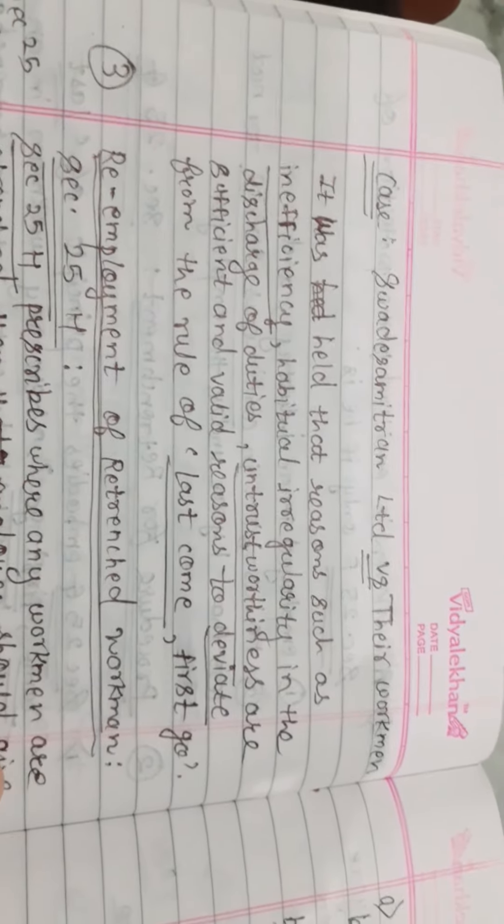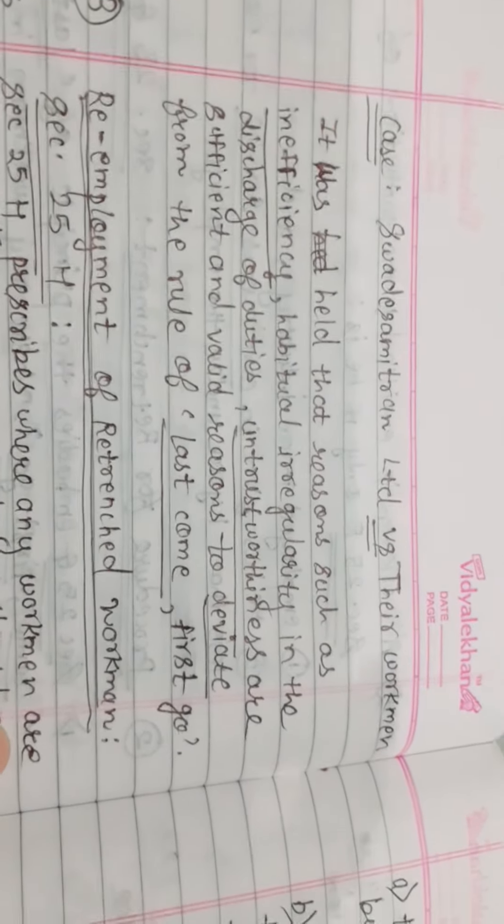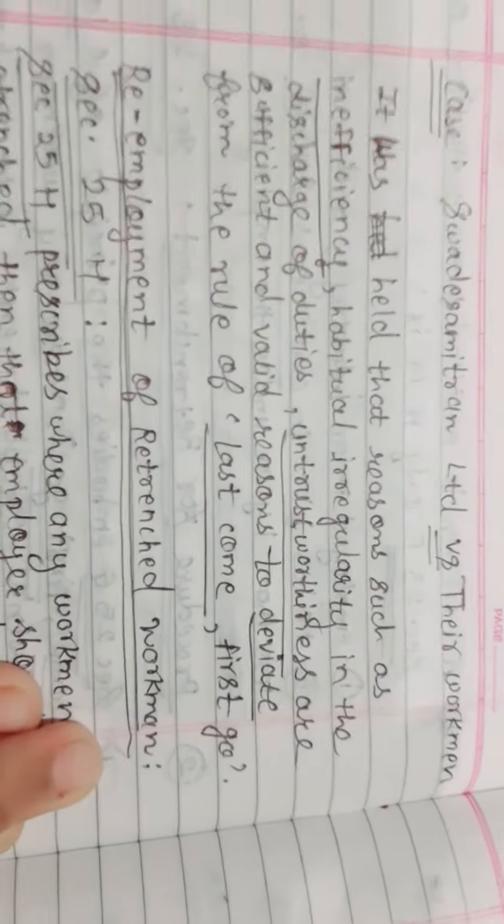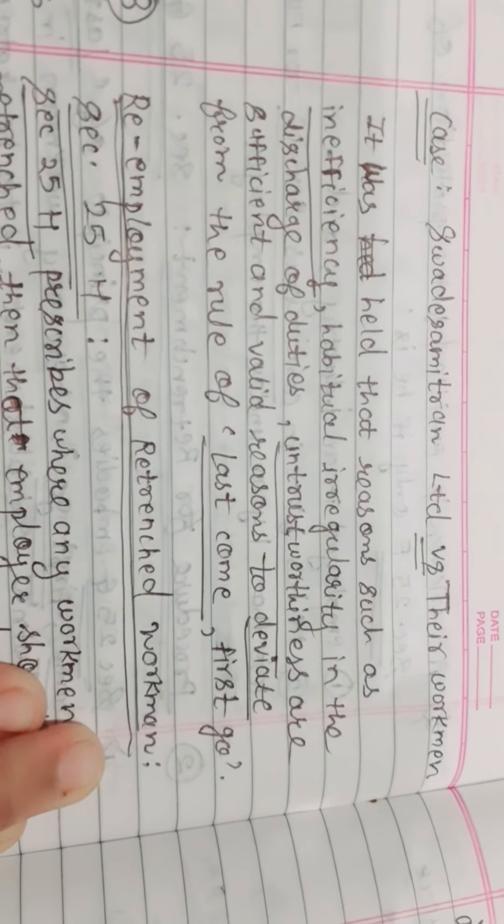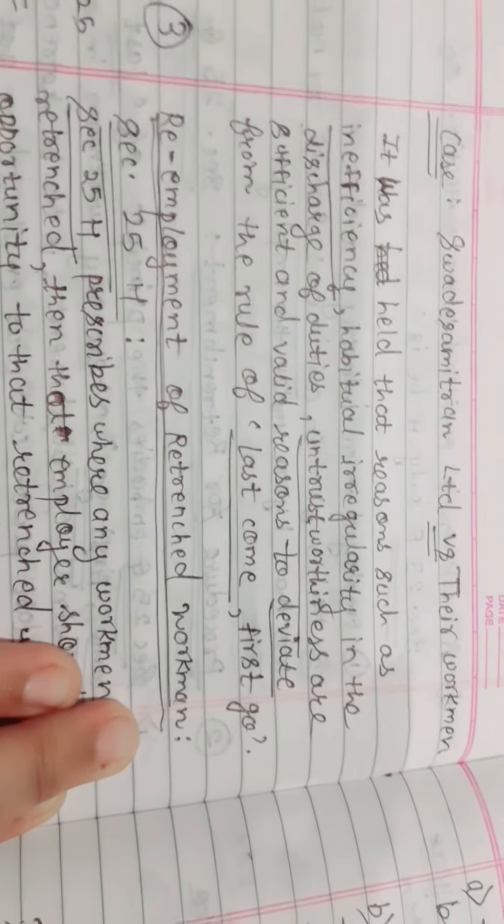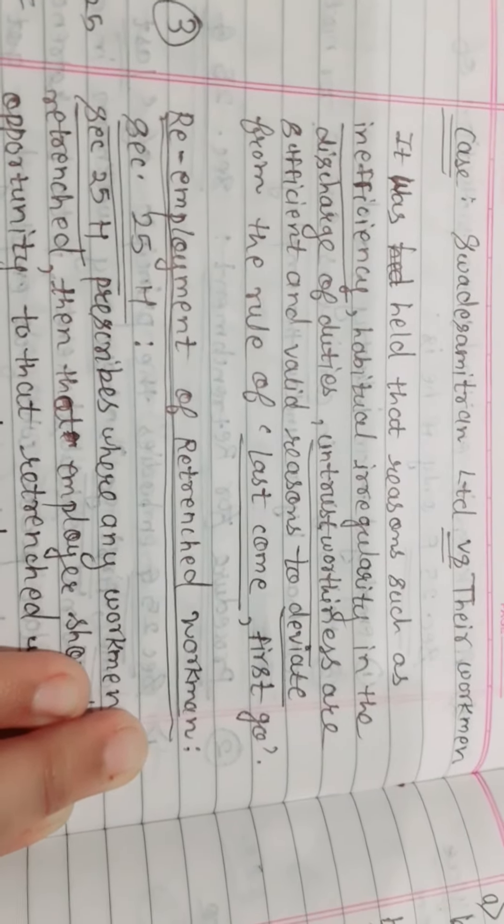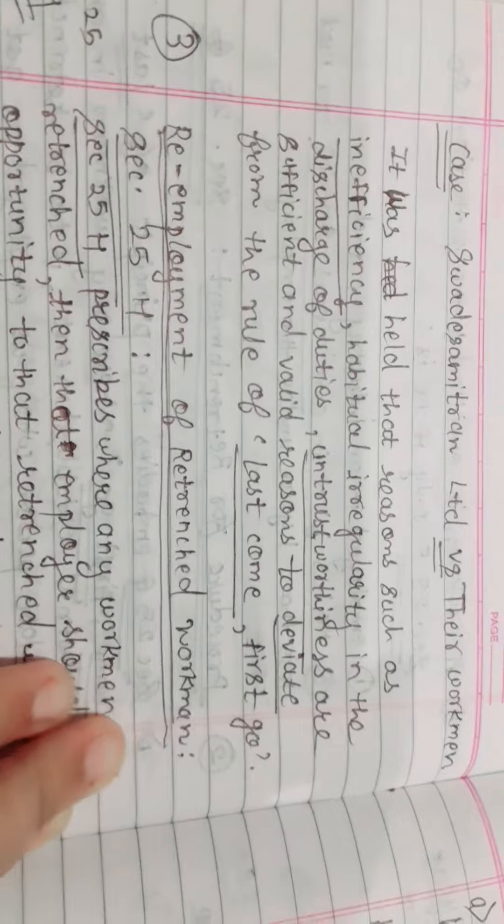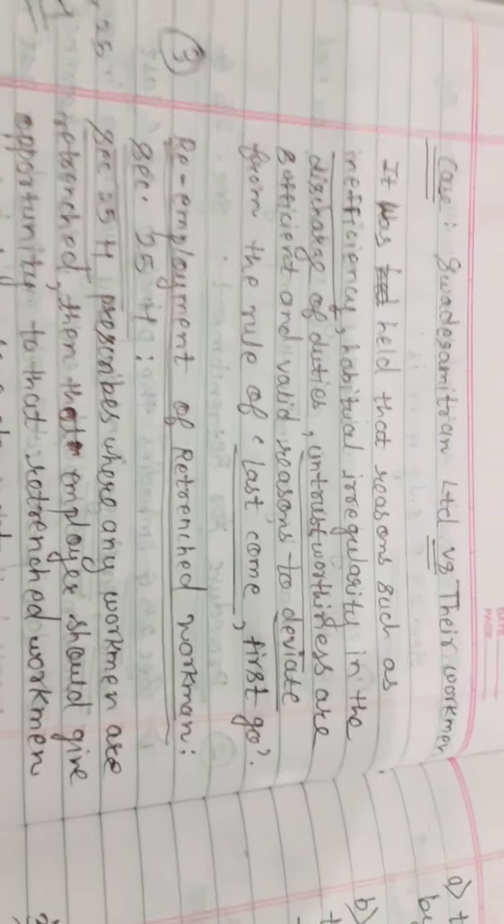The case is Swadeshi Samitran Limited versus their workmen. It was held that reasons such as inefficiency, habitual irregularity in the discharge of duties, and untrustworthiness are sufficient and valid reasons to deviate from the rule of last come first go.